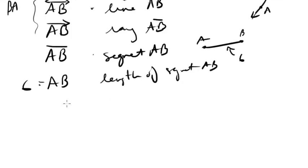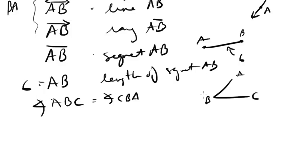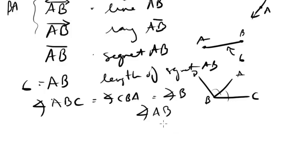This symbol represents an angle — angle ABC. We could also call it angle CBA, just reversing the direction. Depending on context, we might call it angle B, but the problem is there could be another angle at the same vertex — so we'd have to differentiate using angle ABC versus angle ABD. You can't just say angle AB either — you need three letters, because AB alone doesn't specify which angle is meant.